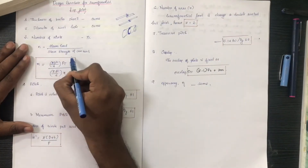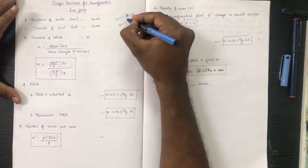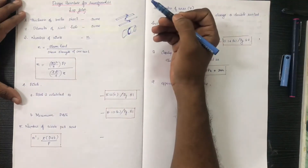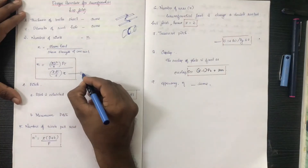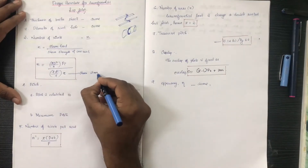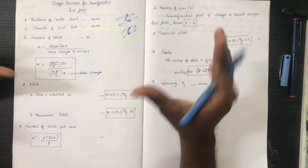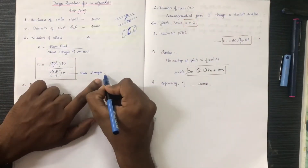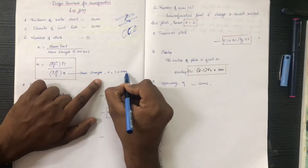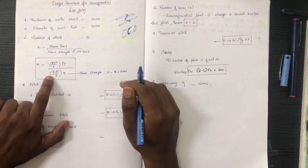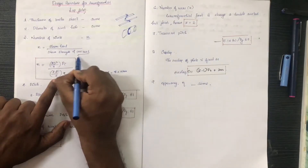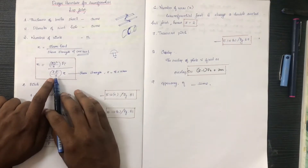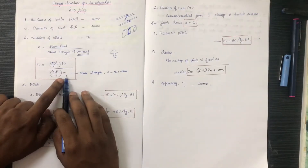The number of rivets is the steam load divided by the shear strength of one rivet. We divide by the shear strength of one rivet. The shear strength is equal to the shear stress multiplied by the area. The shear strength of one rivet is pi d squared by 4 into tau, where d is the diameter of the rivet.